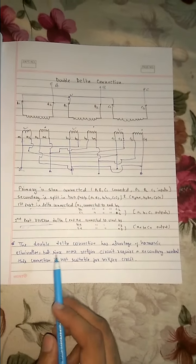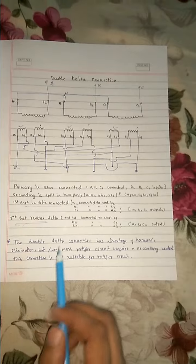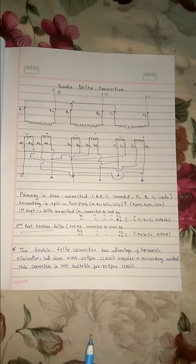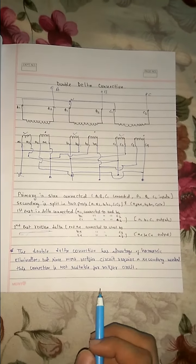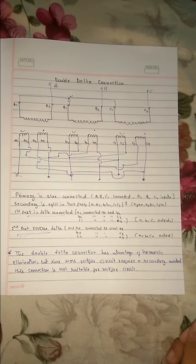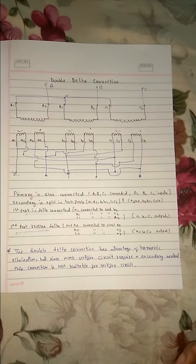So this is our double delta connection. The only problem is, since the secondary side is star delta connected, so we don't get any neutron, for which we cannot use it effectively in rectifier circuit. Thank you.